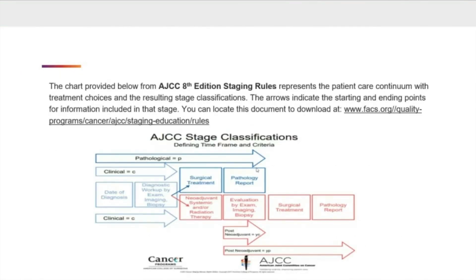This next slide provides a chart from AJCC 8th Edition staging rules. It represents the patient care continuum with treatment choices and the resulting stage classification. The arrows indicate the starting and ending points for information included in that stage. If you would like, you can locate this document to download at the following website.